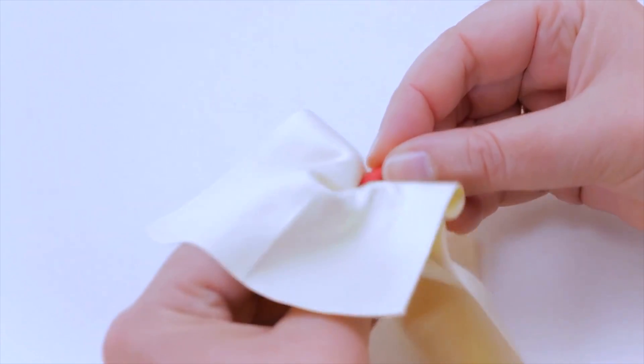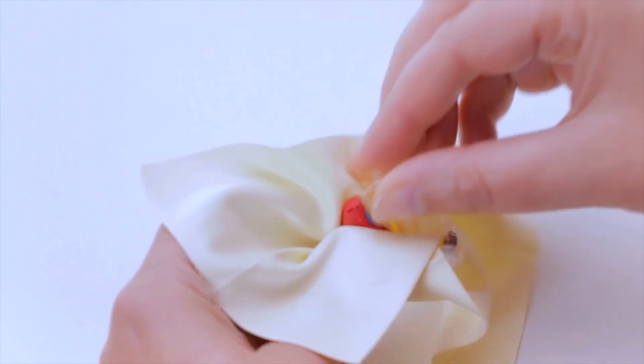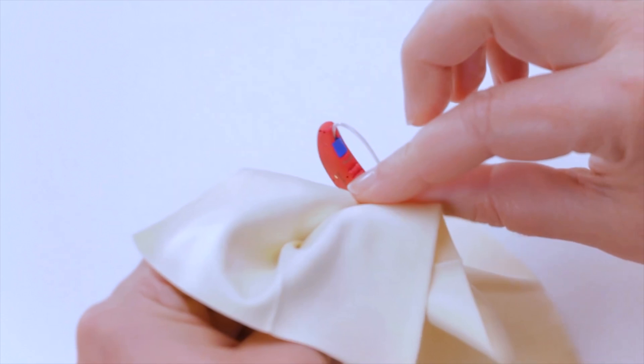Regardless of what type of hearing aid you have, on a daily basis, wipe the outer casing with a dry microfiber cloth. More stubborn dirty spots can be wiped away with a damp cloth.